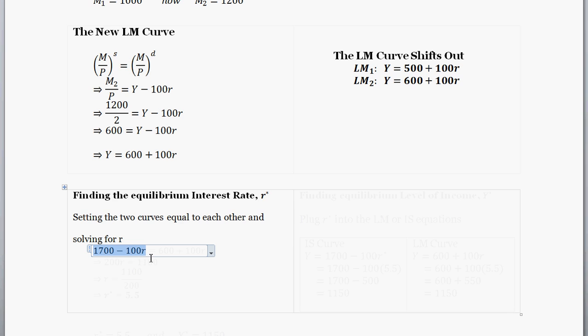So the IS curve is here. This is what we had found in a previous part for the IS curve. And we just found the LM curve equation, which is here. The IS curve was Y equals this term here. And the LM curve was Y equals this term here. So we're going to set those two curves equal to each other.